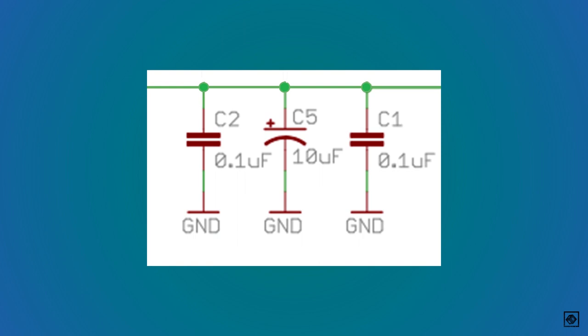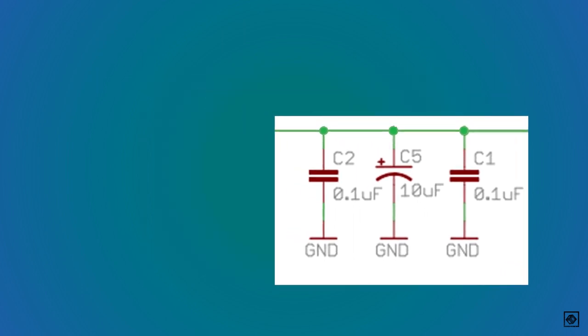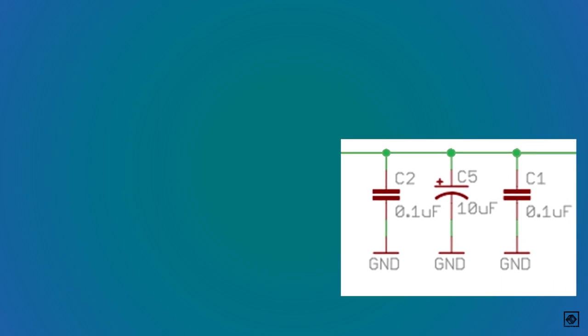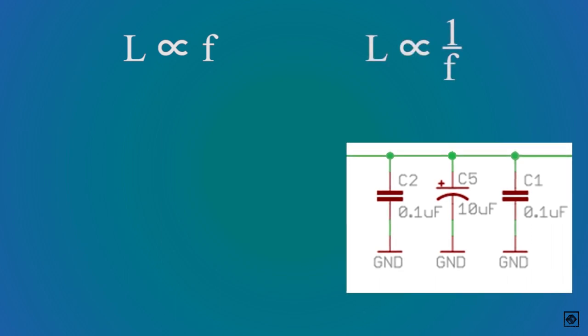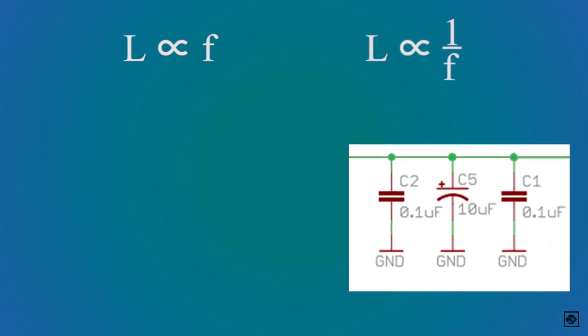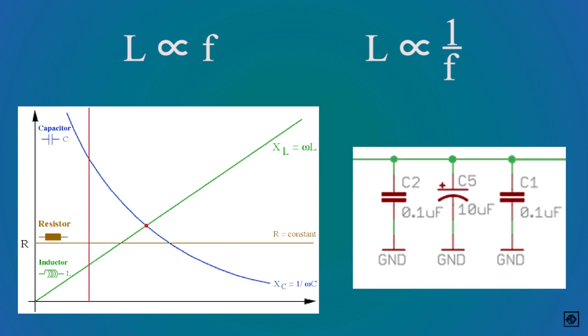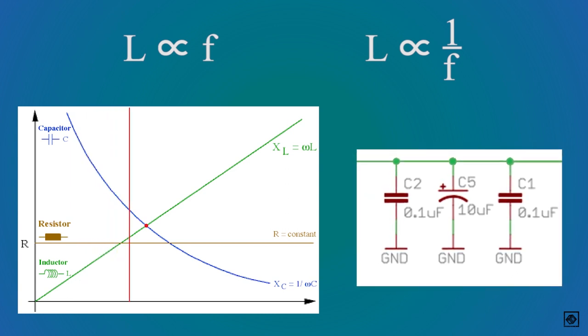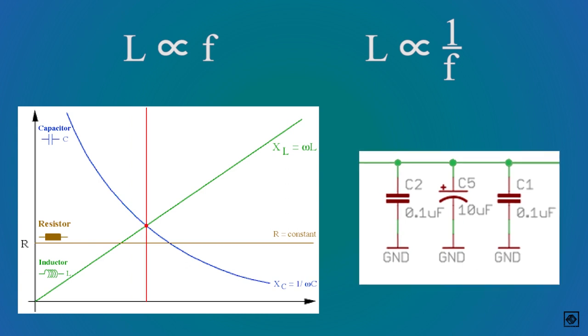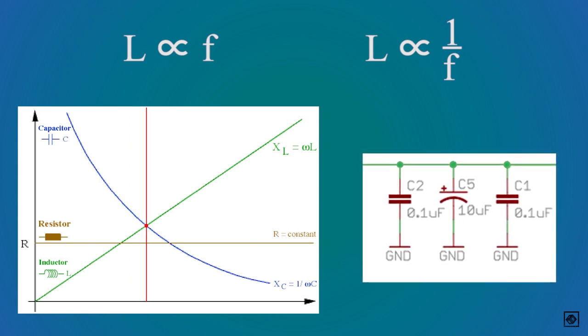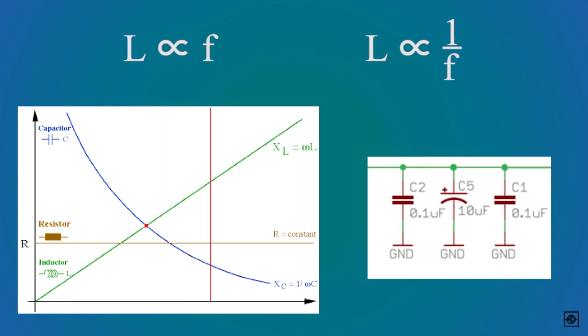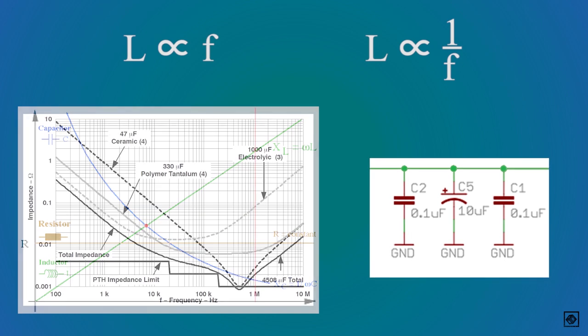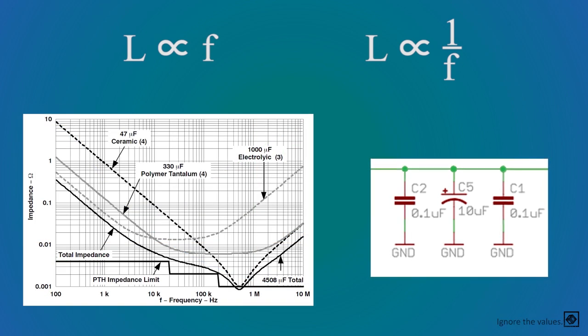Sometimes multiple different types of capacitors are used. As you know capacitors have some parasitic inductance, which is directly proportional to the frequency, and the capacitive reactance is inversely proportional to the frequency. Hence, as the frequency increases, the capacitive reactance decreases and the inductive reactance increases. The frequency where both are equal is called self-resonant frequency. If the frequency is further increased, the capacitor will now have more inductive reactance than capacitive reactance. Hence, we use multiple different types of capacitors to get a large range of lower impedance.